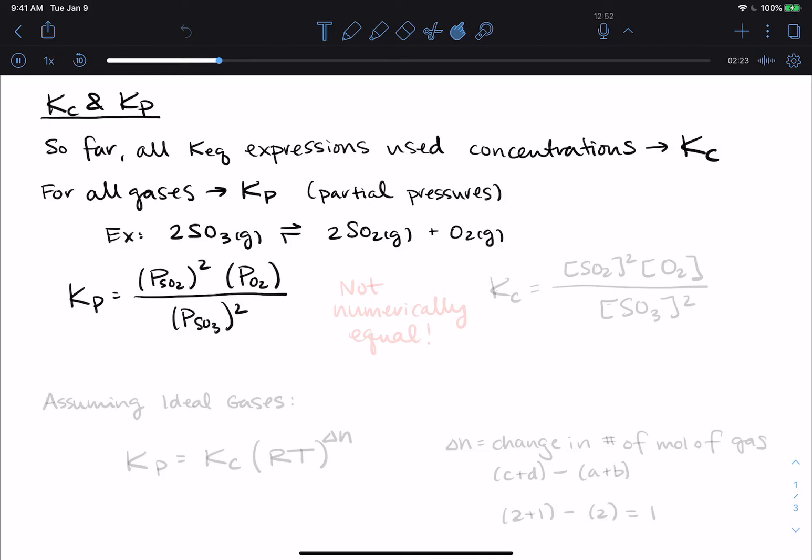You might see some examples that don't have parentheses around these individual pieces. I would like you to include them just for clarity. Now I want to put up the KC expression for this so that we can do a comparison. If I have enough information to work with this in concentrations, I could do the concentration of SO2 squared times the concentration of O2 divided by the concentration of SO3 also squared.